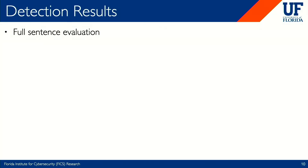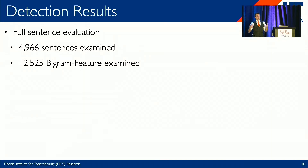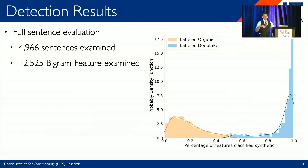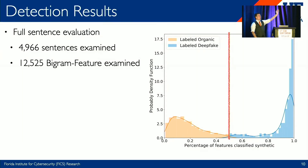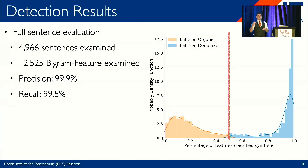To evaluate our overall detector, we ran just under 5,000 full organic and deepfake sentences, broken into 12,525 distinct bigram feature pieces. We implemented a simple majority-wins voting scheme to determine whether each sample was deepfake or organic. Our decisions are being pushed to the edges — we're not splitting hairs but finding demonstrative, meaningful errors that the deepfakes are making. Overall, we achieved a precision rate of 99.9% with a recall of 99.5%.